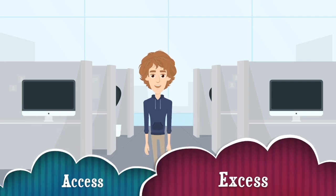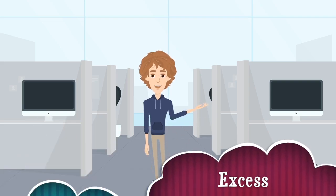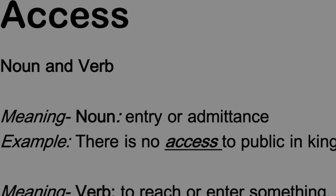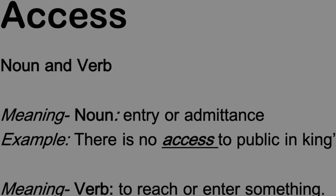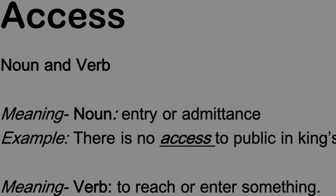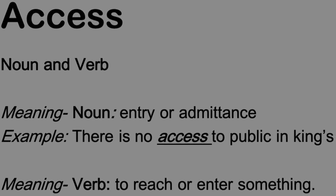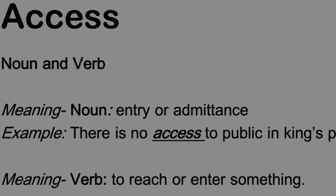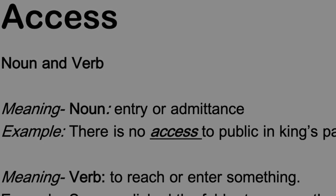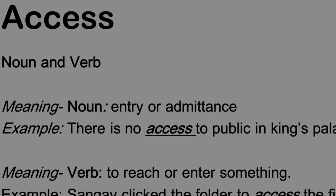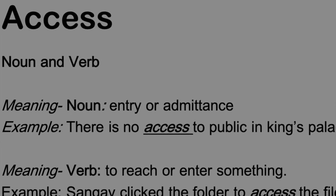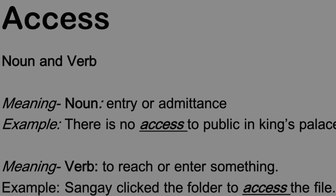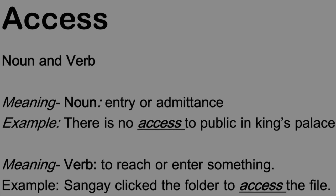Access is a noun as well as a verb, meaning entry or admittance. For example: 'There is no right of access for the public in the king's palace' — here access is used as a noun. When we say 'click the folder and access the file,' here access is used as a verb.